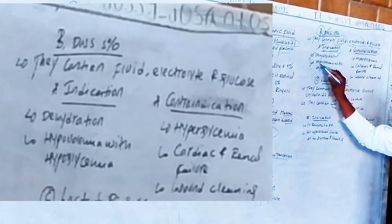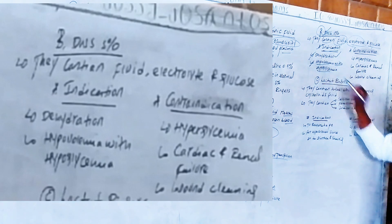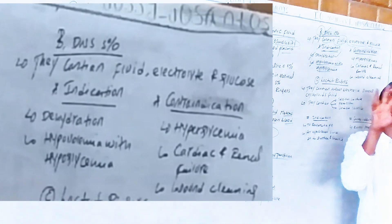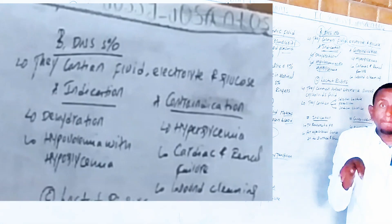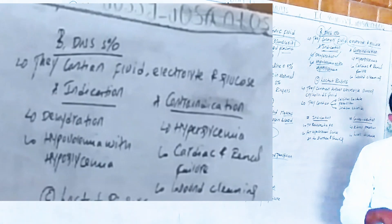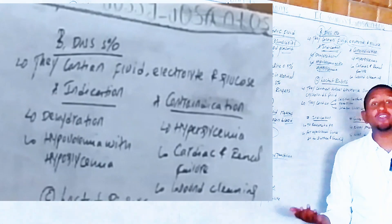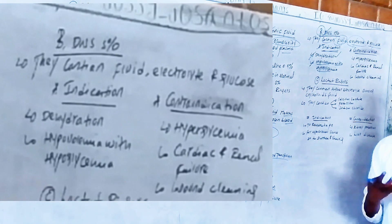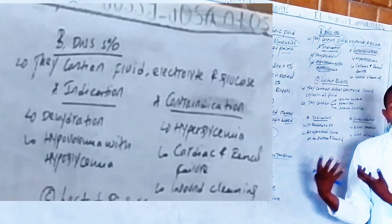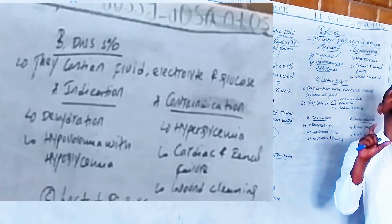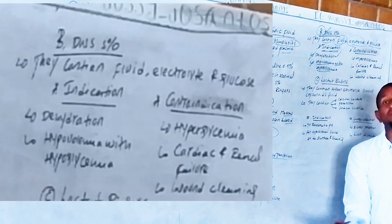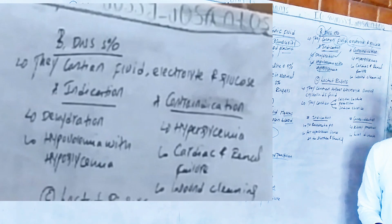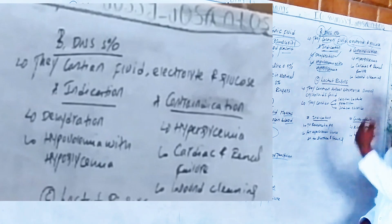When a patient arrives in the emergency department with both hypoglycemia and hypovolemia, the best fluid to treat both conditions is D5NS, since it contains glucose as well as electrolytes. D5NS is the best emergency fluid for a patient with both hypoglycemia and hypovolemia or dehydration.